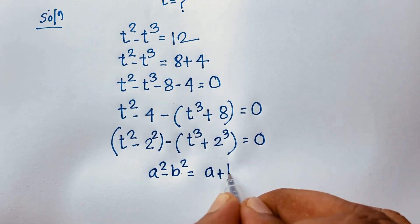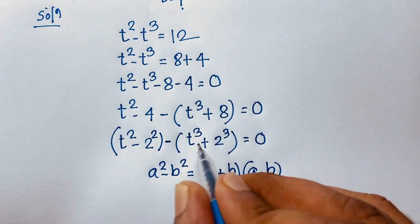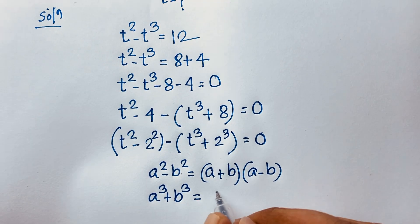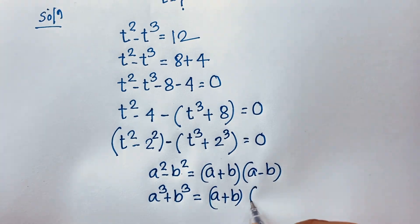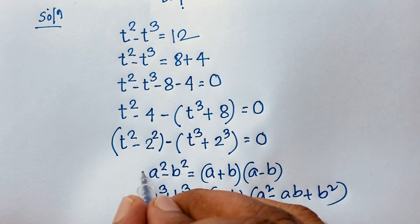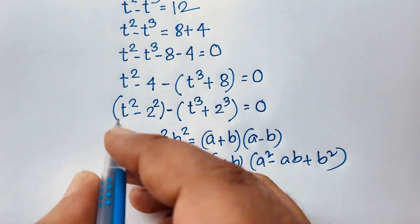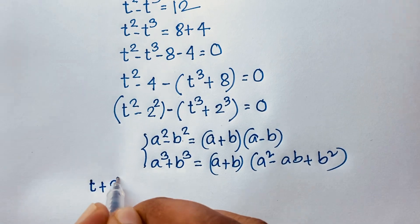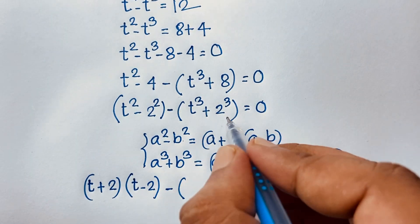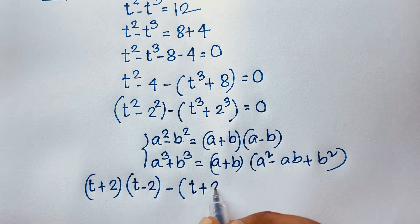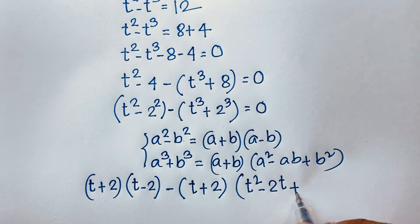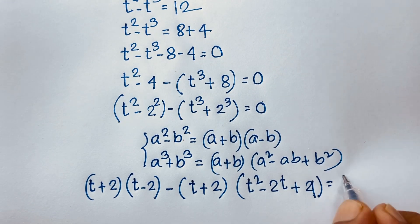Now I can say here is a square minus b square. You know that a square minus b square it will be a plus b times a minus b. Then here, a cube plus b cube — you know that a cube plus b cube it will be a plus b times a square minus ab plus b square. If I apply both formulas, it will be t plus 2 times t minus 2, then negative sign — a cube plus b cube — it will be a plus b times a square, then 2 times t it will be 2t, plus b square — 2 to the power 2 it will be 4 — equal to 0.